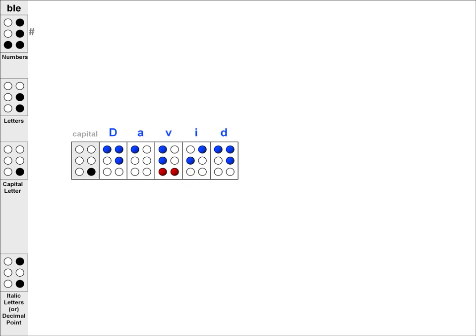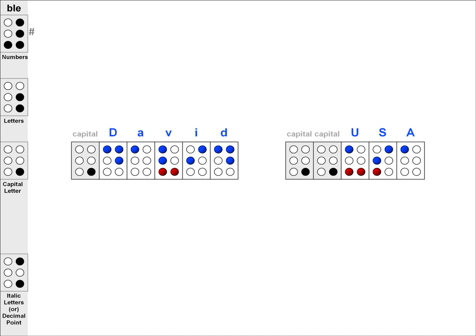So now let's take a look at how the capital sign works. As mentioned earlier, when there is only one capital sign, it only capitalizes the very next letter, such as the letter D in the name David. However, if you put two capital signs together, they capitalize the entire word that follows, such as when you want to capitalize all three letters in USA.